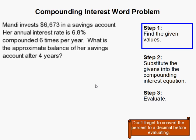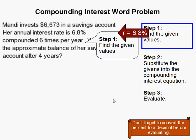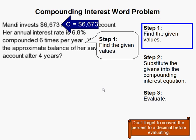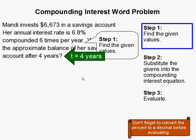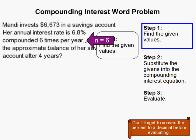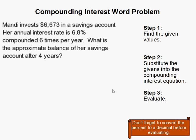So the first thing you should do is find or write down the givens. We have the interest rate at 6.8%. We have the initial investment at $6,673. And time is 4 years. Also, one more thing — you have to know how many times per year it's compounded, because now we're taking into account this compounded issue. So that's 6 times. Alright, so now we have all those givens written down.